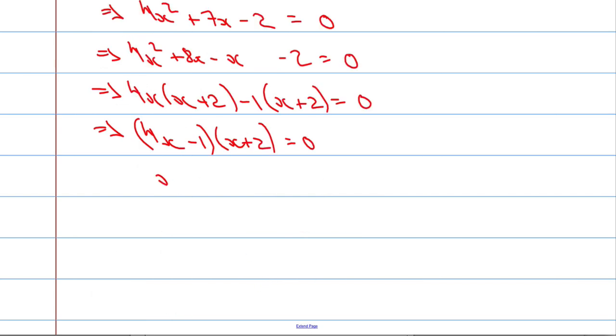So that means that x equals 1 over 4, and x must equal negative 2. Okay, so x is 1 quarter and x is negative 2. We're going to substitute that back in. I'm going to substitute it back into y equals 4x plus 2. You can choose either, it doesn't matter.